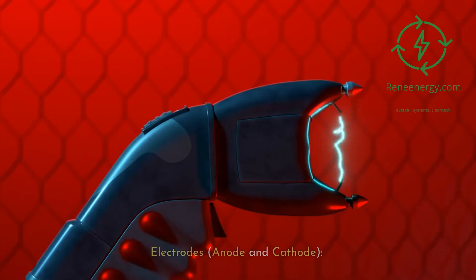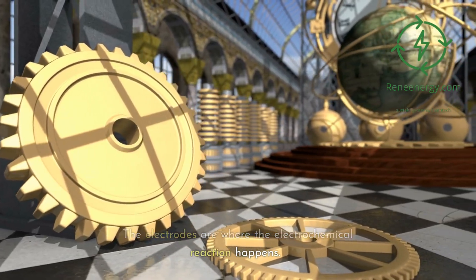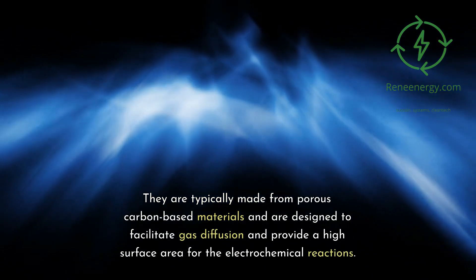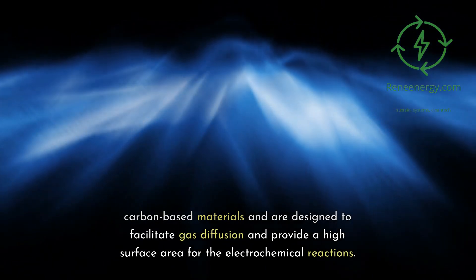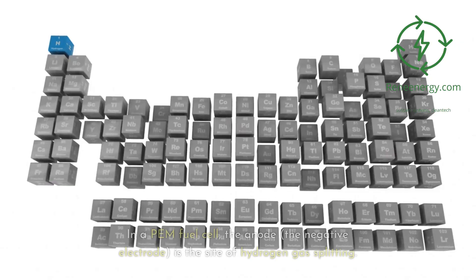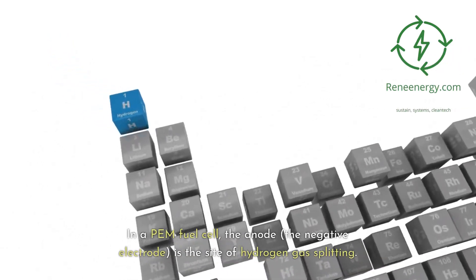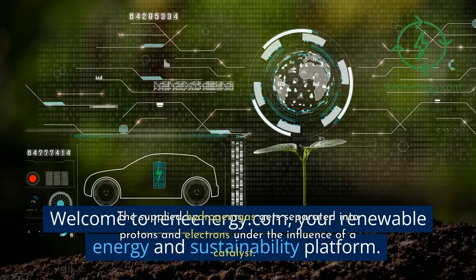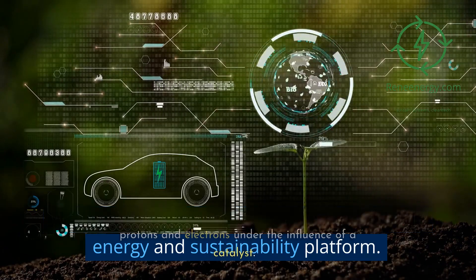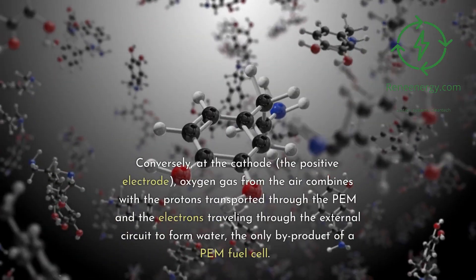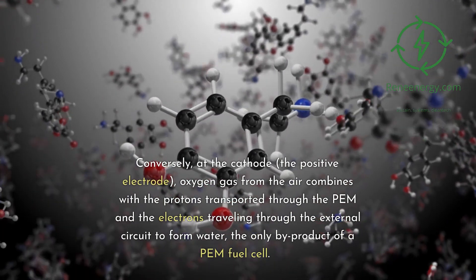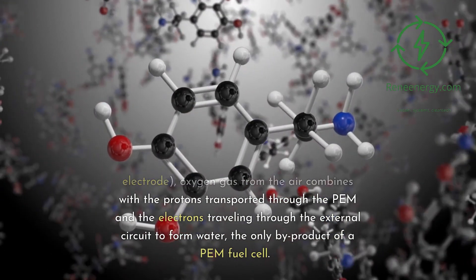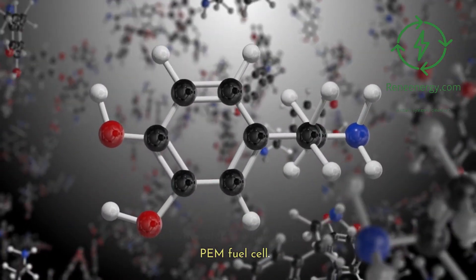The electrodes — anode and cathode — are where the electrochemical reactions happen. They are typically made from porous carbon-based materials and are designed to facilitate gas diffusion and provide a high surface area for the electrochemical reactions. In a PEM fuel cell, the anode, the negative electrode, is the site of hydrogen gas splitting. The supplied hydrogen gas gets separated into protons and electrons under the influence of a catalyst. Conversely, at the cathode, the positive electrode, oxygen gas from the air combines with the protons transported through the PEM and the electrons traveling through the external circuit to form water — the only byproduct of a PEM fuel cell.